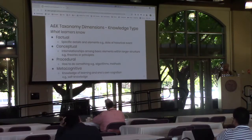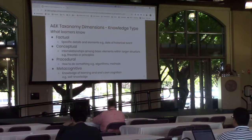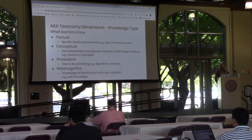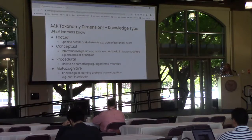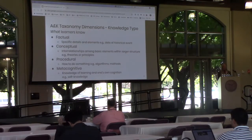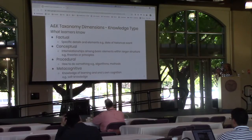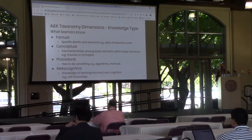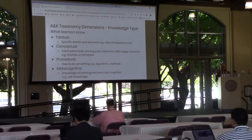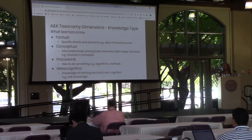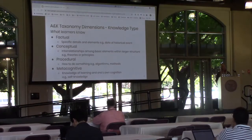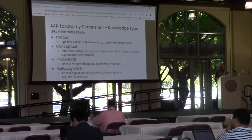The second dimension is the knowledge type dimension. This dimension describes what learners know and is made up of four different knowledge types. The first is factual knowledge — basic elements that a learner must know to be acquainted with a discipline or solve problems within it, for example the date of a historical event. The second is conceptual knowledge, which involves interrelationships among basic elements within a larger structure, such as theories and principles. Next is procedural knowledge, which involves how to do something, methods of inquiry, and criteria for using skills and techniques — examples include algorithms or methods.